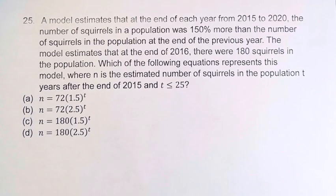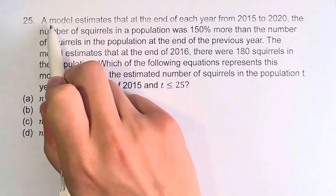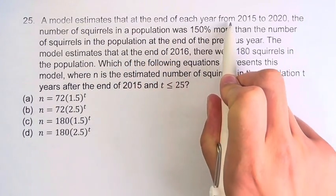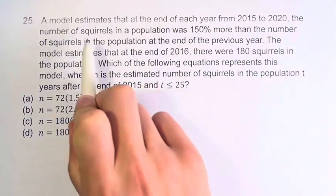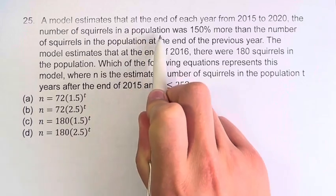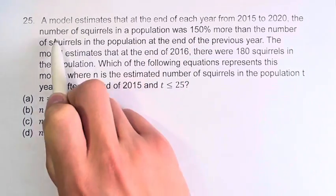Hello and welcome back to our video. In this problem, we're told that a model estimates that at the end of each year from 2015 to 2020, the number of squirrels in the population was 150% more than the number of squirrels in the previous year.